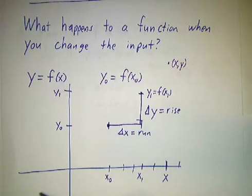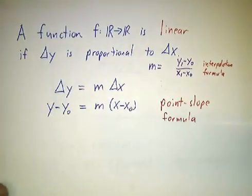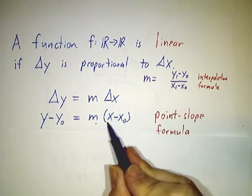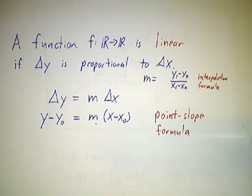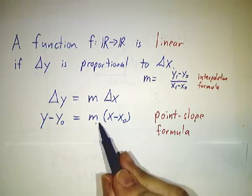So no matter where you are on the graph of this function, the change in the output, y minus y0 has to be m times the change in the input. And this is called the point slope formula. It gives you y as a function of x.